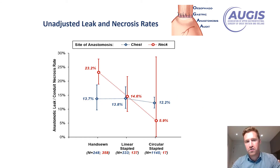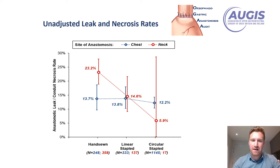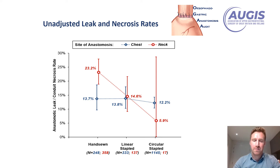Looking at the unadjusted leak and necrosis rates, as shown here in red for neck anastomosis: 23% of patients who had a hand sewn neck anastomosis had a leak or necrosis, 14.6% with a linear stapled anastomosis in the neck, and 5.9% with a circular stapled anastomosis in the neck. The numbers were much more similar for chest anastomosis, with hand sewn, linear stapled, and circular stapled having leak or conduit necrosis rates of 13.7%, 13.8%, and 12.2% respectively.